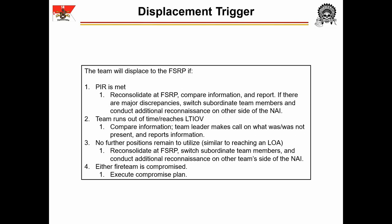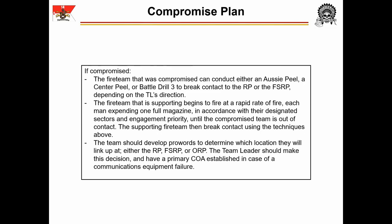Finally, if the team is compromised during their reconnaissance, they execute the compromise plan. The compromised fireteam can conduct either an Aussie peel, a center peel, or a Battle Drill III to break contact to the RP, Far Side Rally Point, or ORP, depending on the team leader's direction. The supporting fireteam begins to fire at a rapid rate, each man expending one full magazine in accordance with designated sectors and engagement priority, until the compromised team is out of contact. The supporting fireteam then breaks contact using the same techniques. The team should develop pro-words to determine which location they will link up at — release point, Far Side Rally Point, or ORP — with the primary course of action established in the five-point contingency plan in case of communications equipment failure.